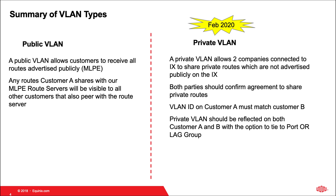Both parties should confirm agreement to share private routes. The VLAN ID on customer A must match the VLAN ID on customer B. The private VLAN should be reflected on both customer A and B, with the option to tie to port or LAG group.